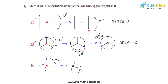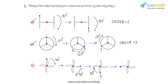Rotating again by 90 degrees, after a total of 180 degrees rotation, the blue dot moves to a new position and the figure is again identical to the question. Rotating by another 90 degrees gives a total of 270 degrees; the blue dot moves again and the figure remains identical. A final 90-degree rotation clockwise brings us back to the original question figure.